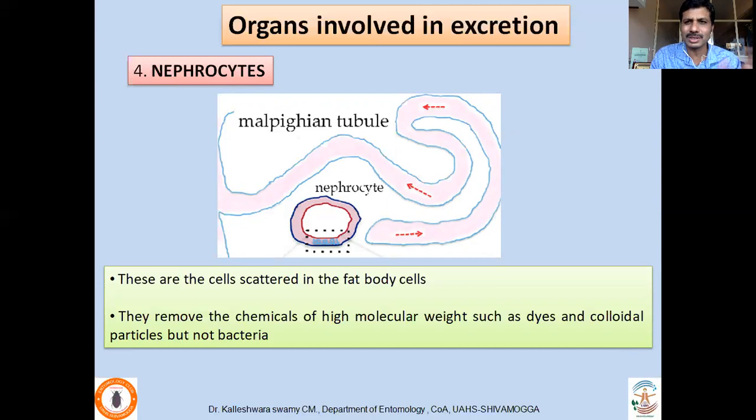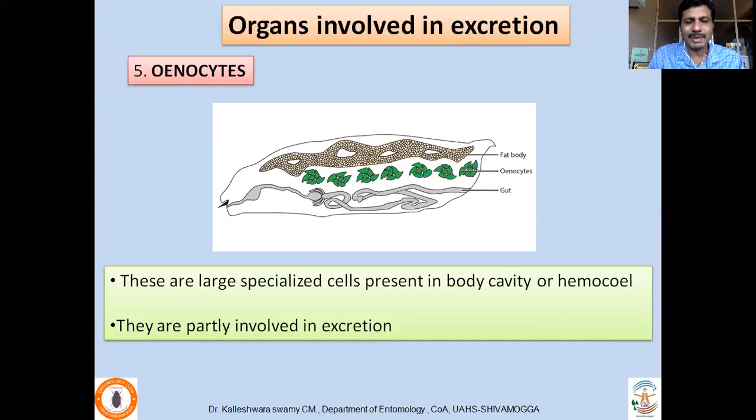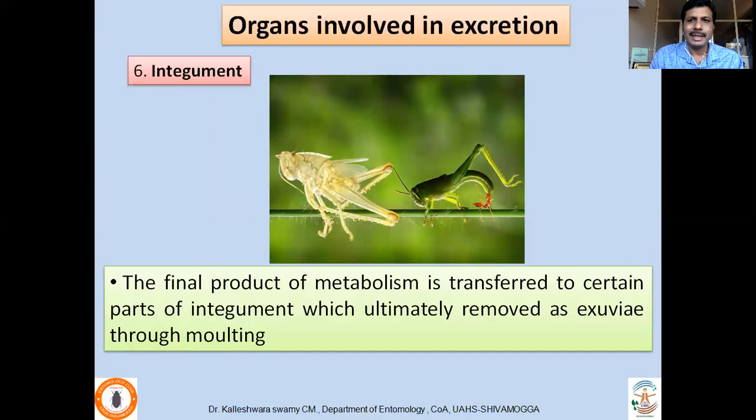Other cells involved in excretion scattered in fat body cells are the nephrocytes, which remove chemicals of high molecular weight such as dyes and colloidal particles, but not bacteria. The next organ of excretion is enocytes, which are scattered in the hemocoel and are also partly involved in excretion.